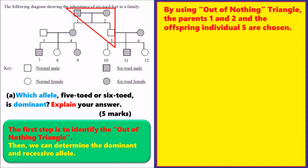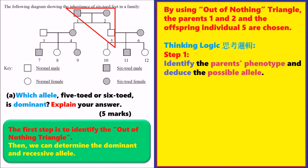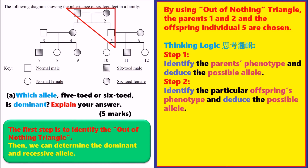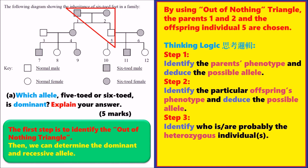You have to identify the out of nothing triangle first, and the family including individuals 1, 2, and 5 is chosen. The first step is to identify the parents' phenotype and deduce the possible allele. Then we identify the offspring phenotype and deduce the possible allele. This first step is the most important because we are looking for the heterozygous individual. After that, we determine the dominant and recessive allele.